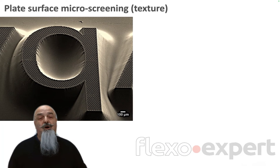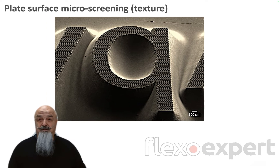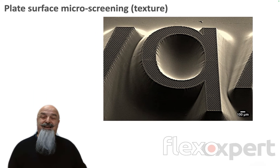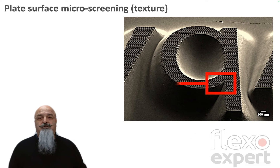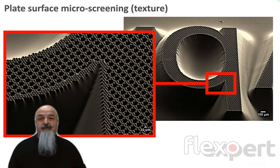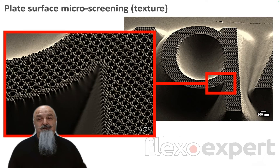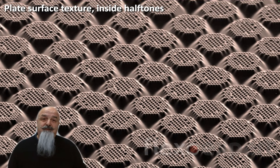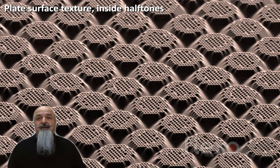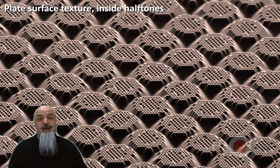Plate surface screening refers to a texture that is imaged onto the printing surface of a flexo plate, to improve its ink transfer and lay down capabilities on press. This texture can be applied onto any graphic element — solids, text, and of course halftone dots. In fact, the surface texture of the plate is applied after halftones are rasterized. Here you see a 50% AM dot on a plate with surface texture applied based on the shape of the dots.